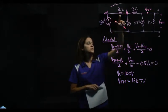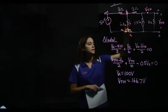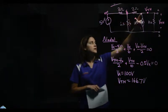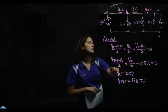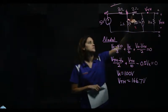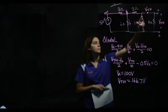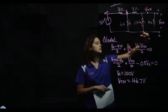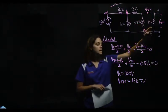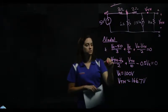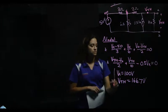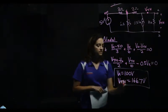Vx minus 50 over 3 plus Vx over 6 plus Vx minus V-Thevenin over 2 equals 0. So here's that equation. V-Thevenin minus Vx over 2 minus 0.5Vx plus V-Thevenin over 10 equals 0. There's that equation. And we solve these two equations and two unknowns. And we get a Vx and a V-Thevenin.